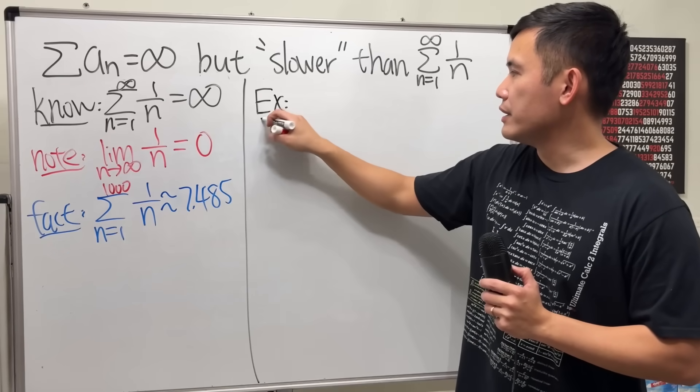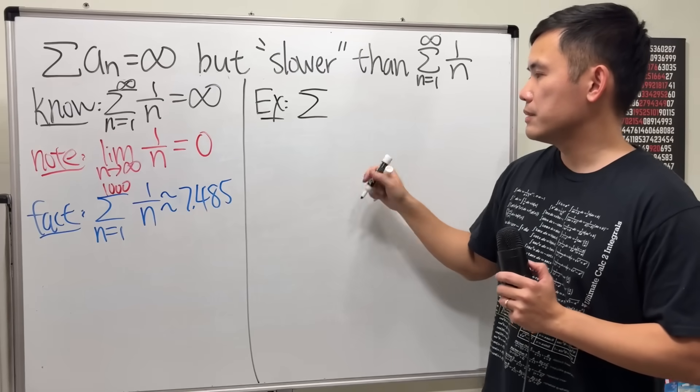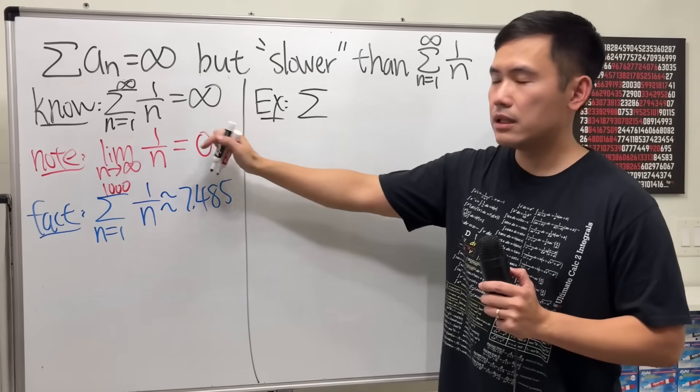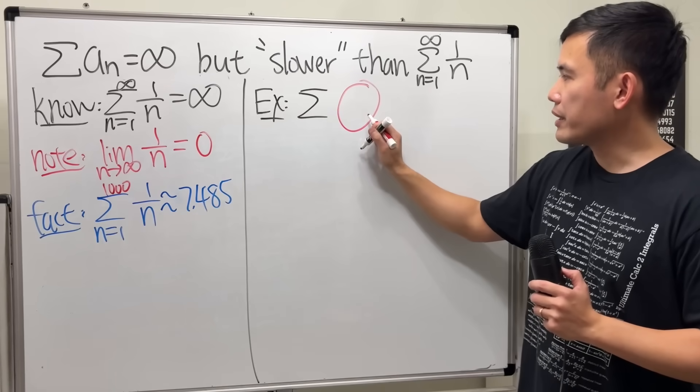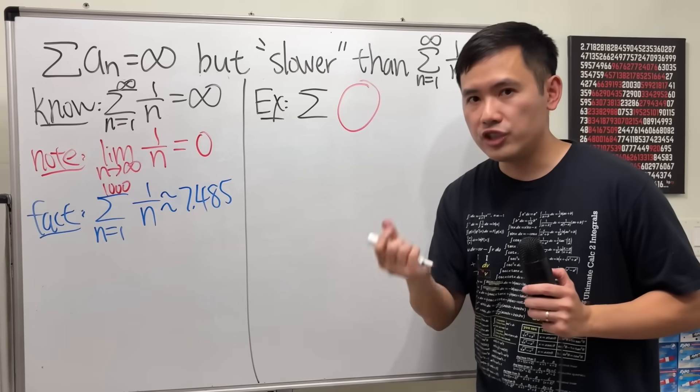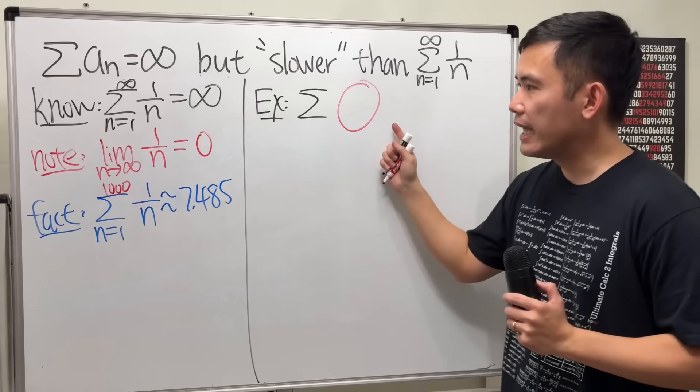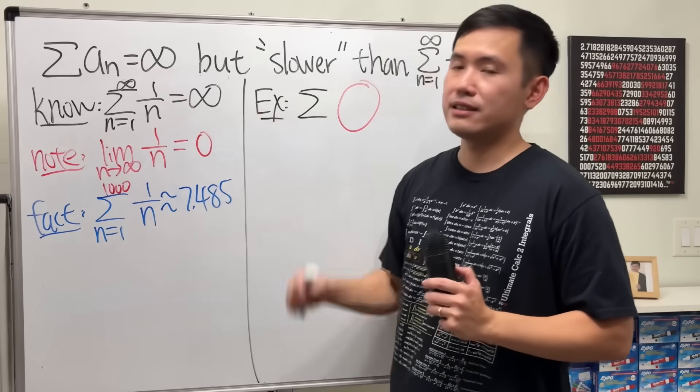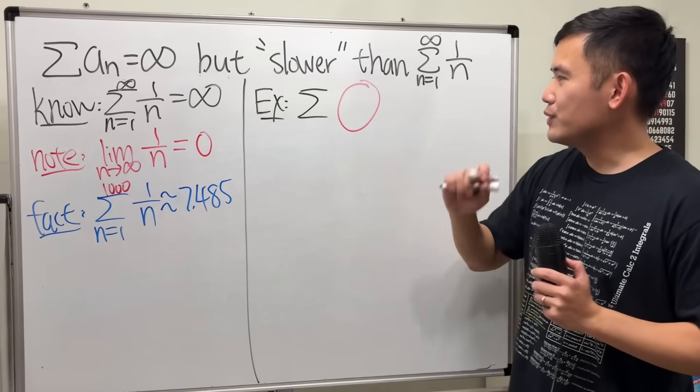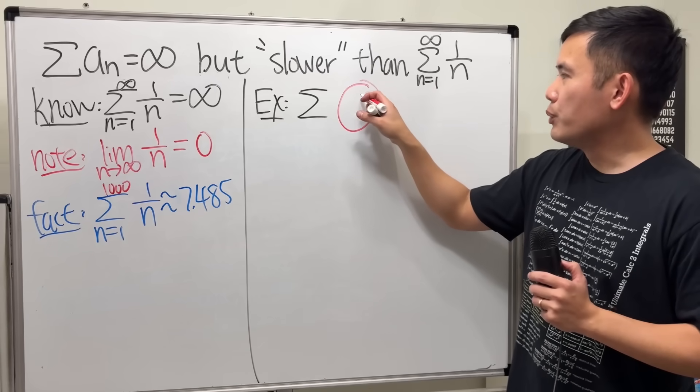If we want to have an example of a series that goes to infinity but slower than that, this part right here has to be approaching 0 as well to have a chance to be smaller or slower than that. So, just for example, if you put 1...